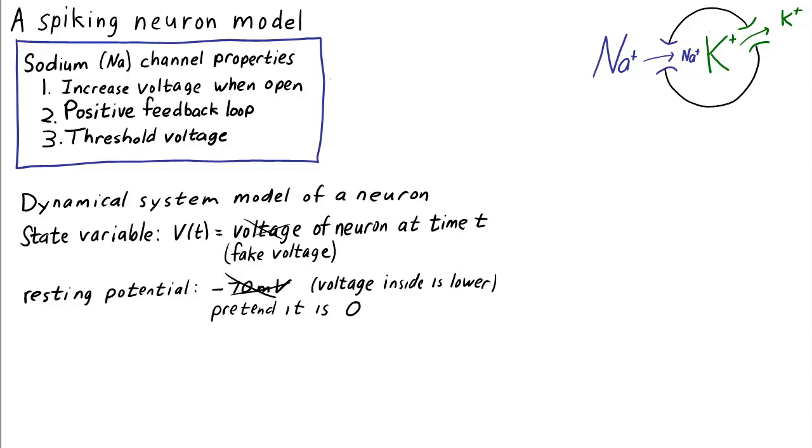Also, if the sodium channels were all the way open, the voltage would go to some high value, something like positive 40 millivolts. But let's pretend that this voltage is one. That way our voltage will live between zero and one. It isn't the real voltage, but just the rescaled voltage that tells us where we are between the minimum and maximum voltage.